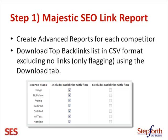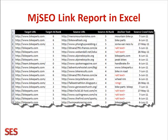We start with Majestic SEO. These are the actual items you want to flag when setting up a report. You're going to need the paid service to create an advanced report, but it's worth it and it's very inexpensive. Once you've created the report, you're going to export it — export the top backlinks report — and make sure these settings are set up: include backlinks with flag. Once you've exported that, you're going to customize it a bit. It will come out in CSV format, which is very basic with no formatting at all, so you'll want to format it.